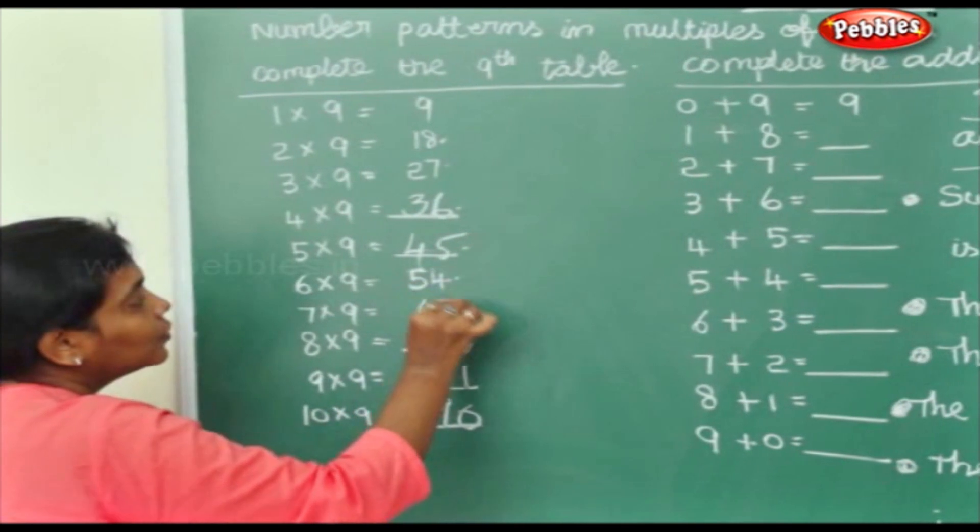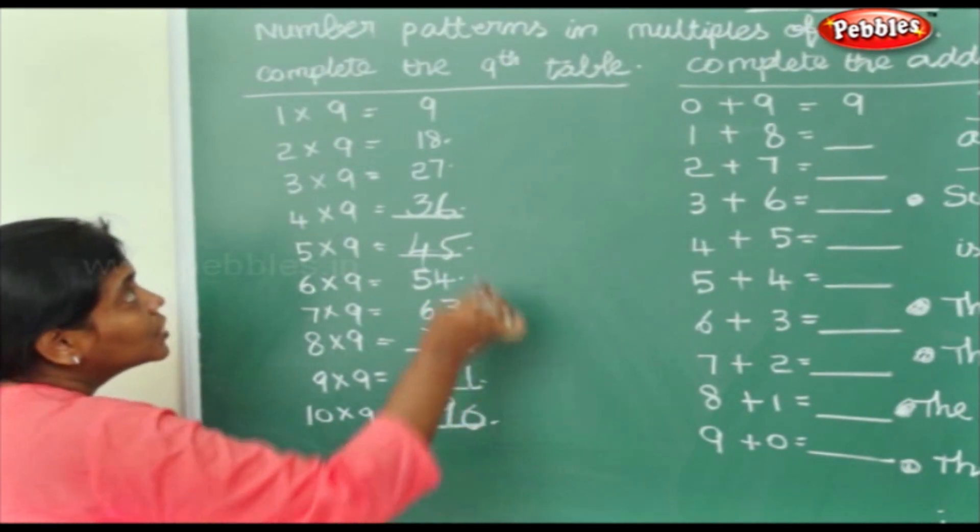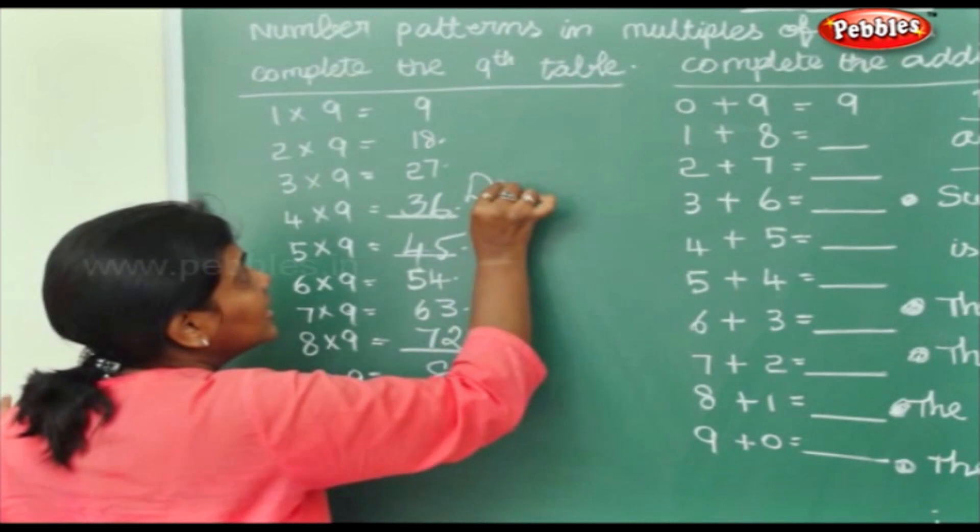So if you see here 9, 8, 7, 6, 5, 4, 3, 2, 1, 0. So from big to small this is descending order.